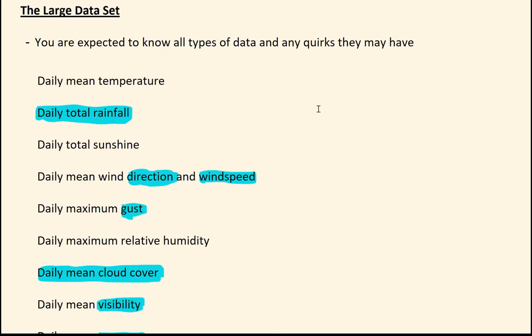So yeah, just to reiterate that for the large data set, you're expected to know all the main types of data and any quirks they may have. I'm going to go over a few quickly. So for daily total rainfall, you have those trace values. And again, in any maps, you just set them as zero.